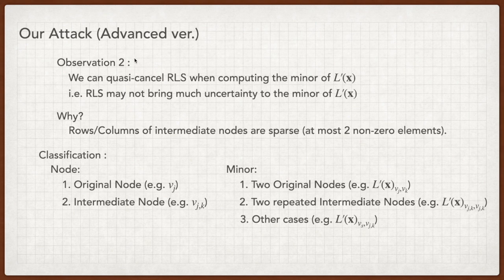But how can we achieve the equality of minors regardless of the randomness injected by the RLS? Here we need our second observation. RLS is a functionally preserving transformation, which means it will not change the determinant. Therefore, we can quasi-cancel RLS when computing the determinant. When it comes to minors, since the computation of minors is similar to the determinant, we can quasi-cancel the RLS, which means the RLS will not bring much uncertainty to the minors.